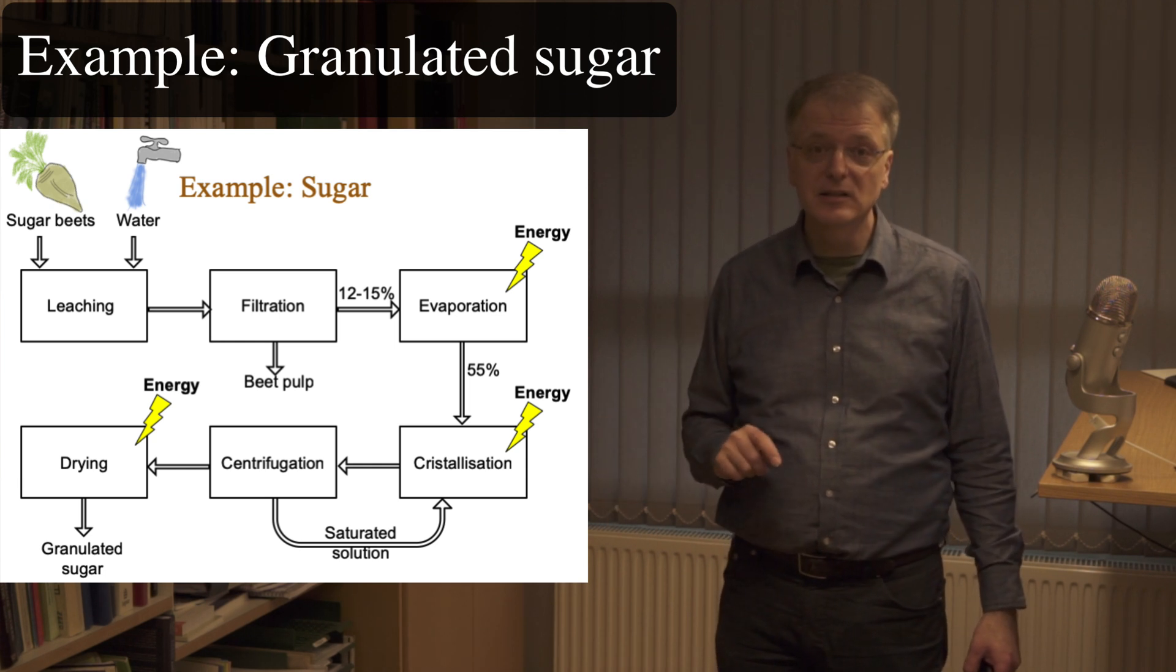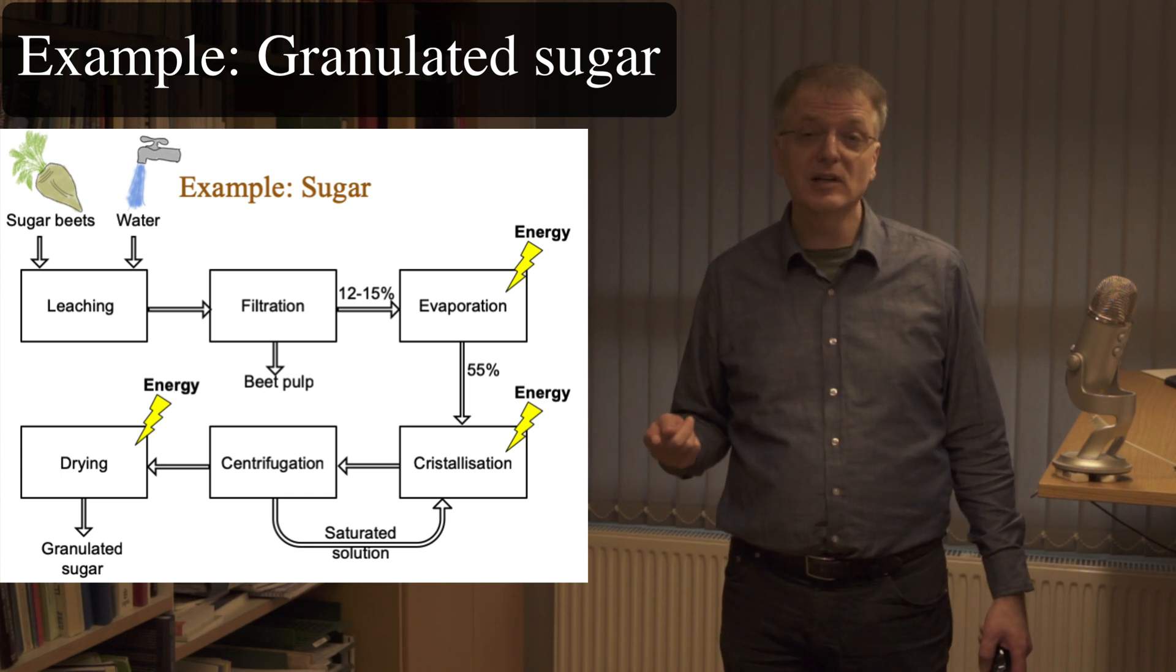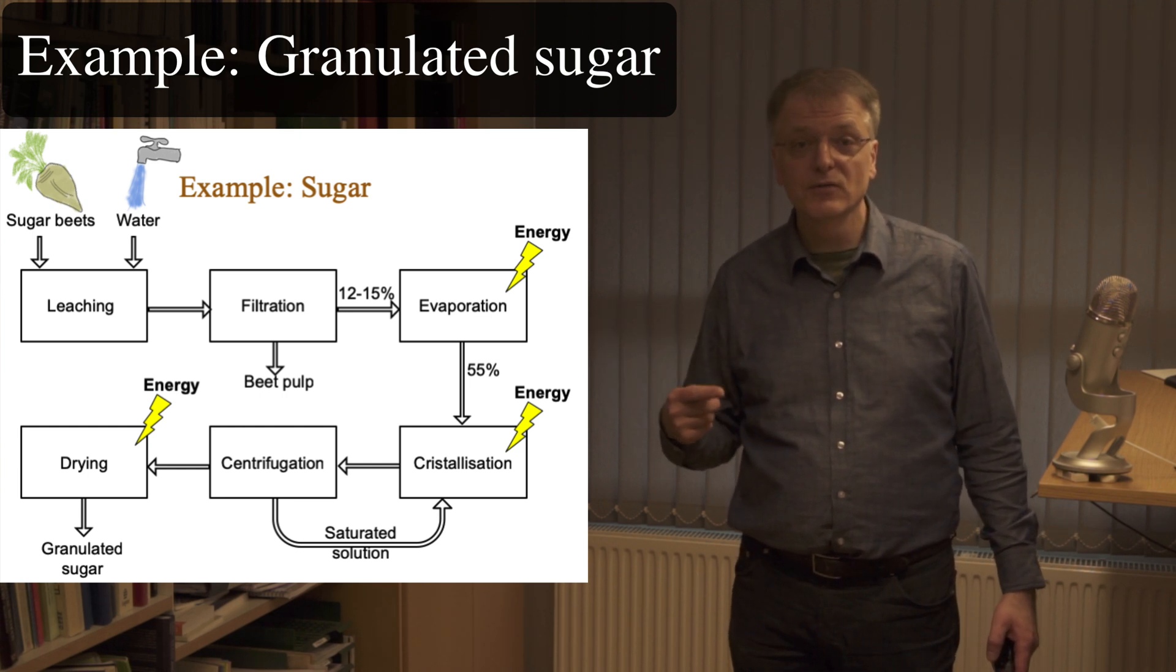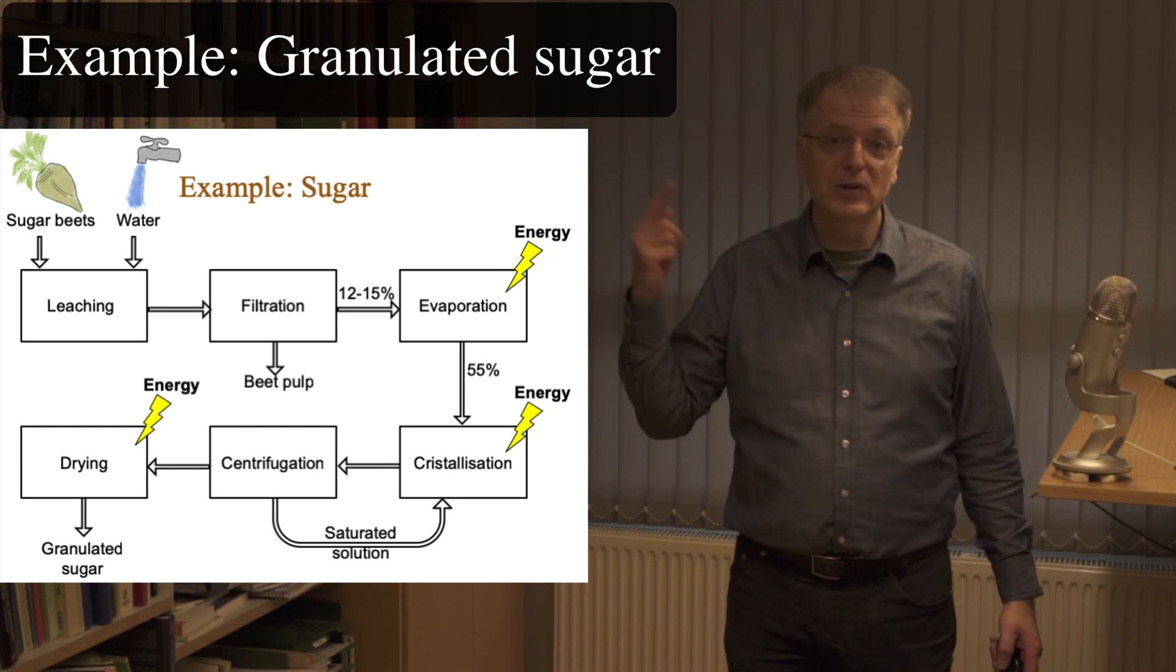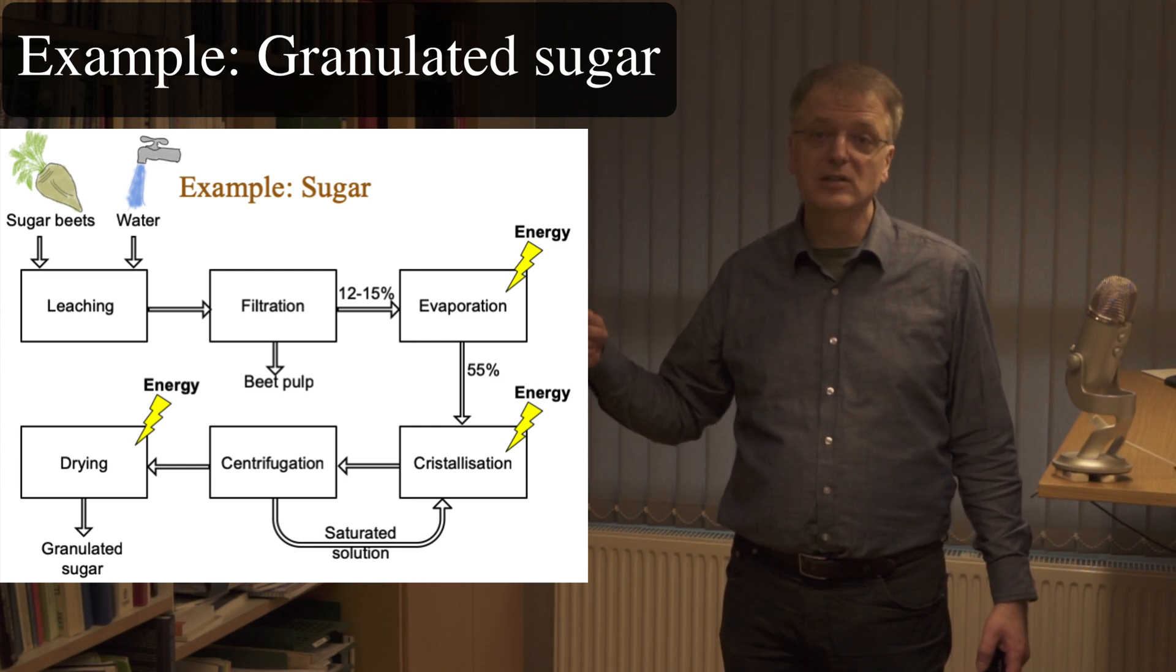The sugar in the slices needs to be leached out, the slices are filtrated away, so that the sugar solution can be evaporated, and then the concentrated solution from evaporation can be turned into granulated sugar through crystallization, centrifugation, and drying.